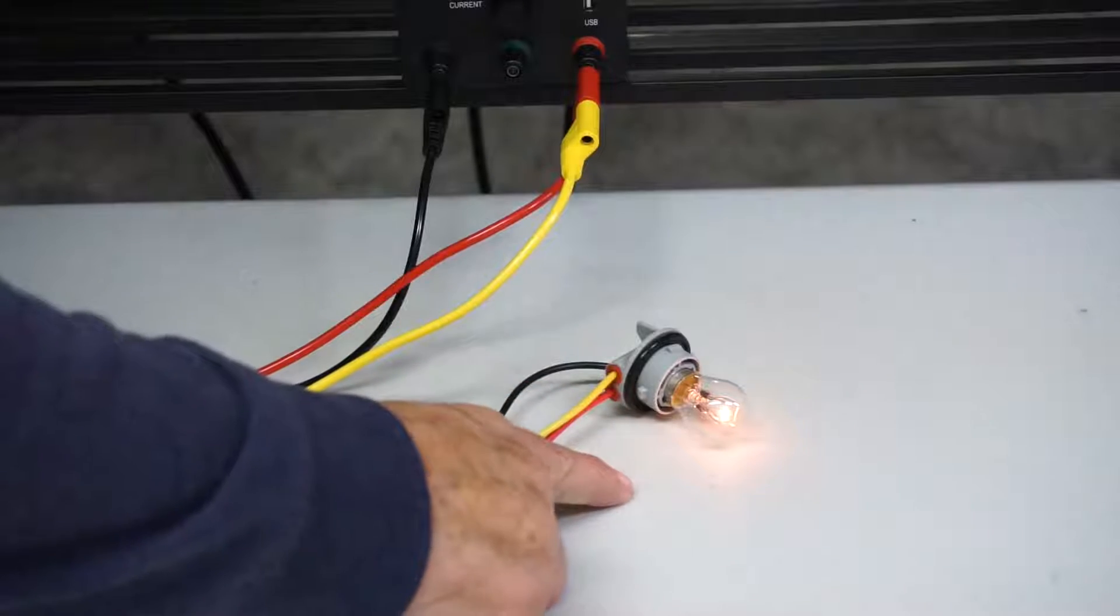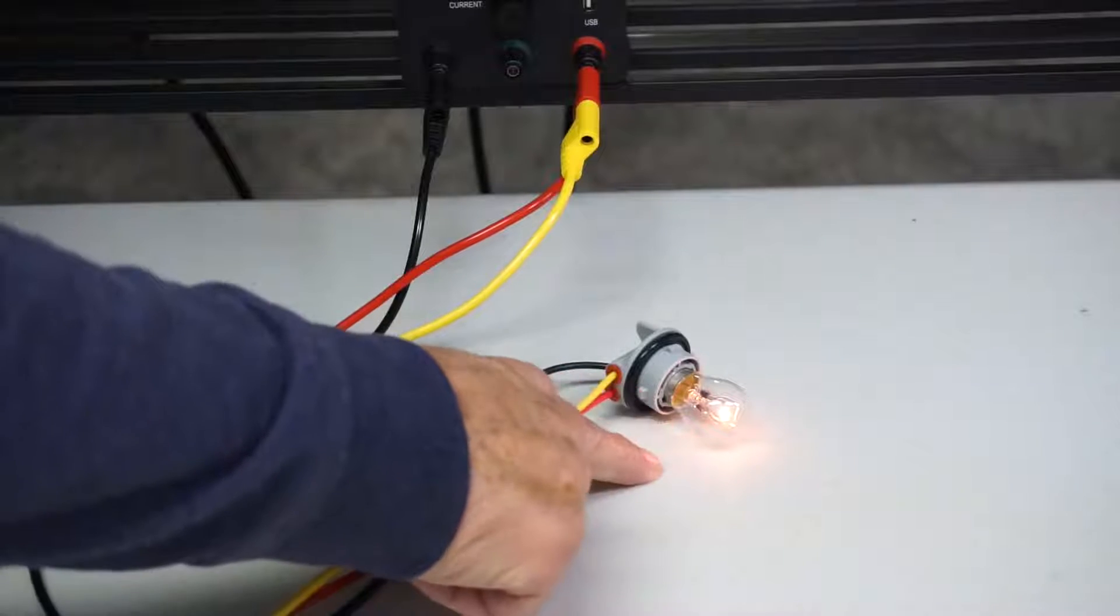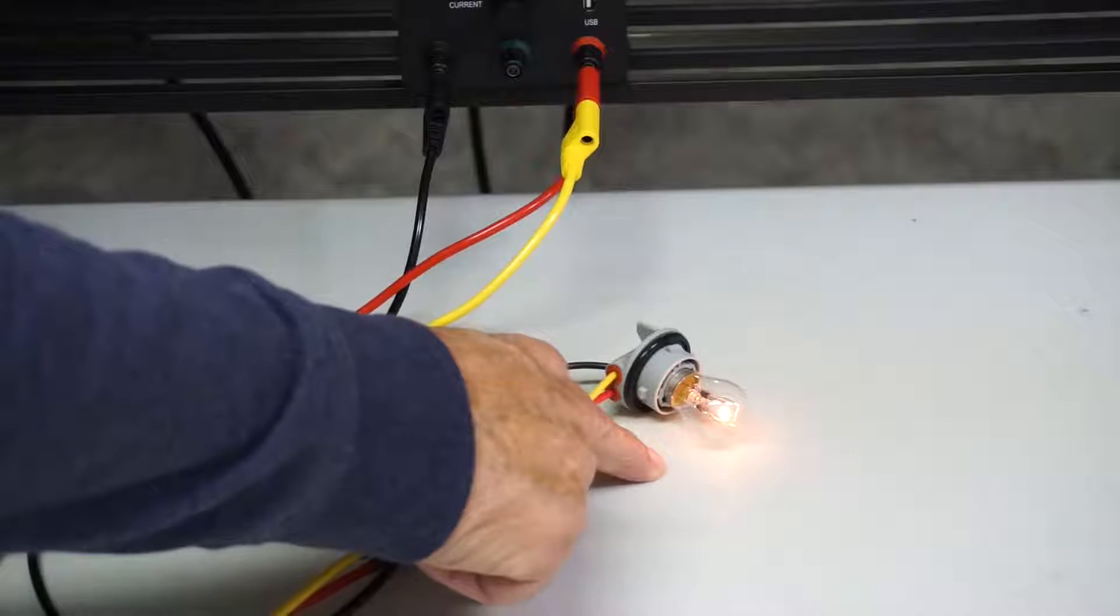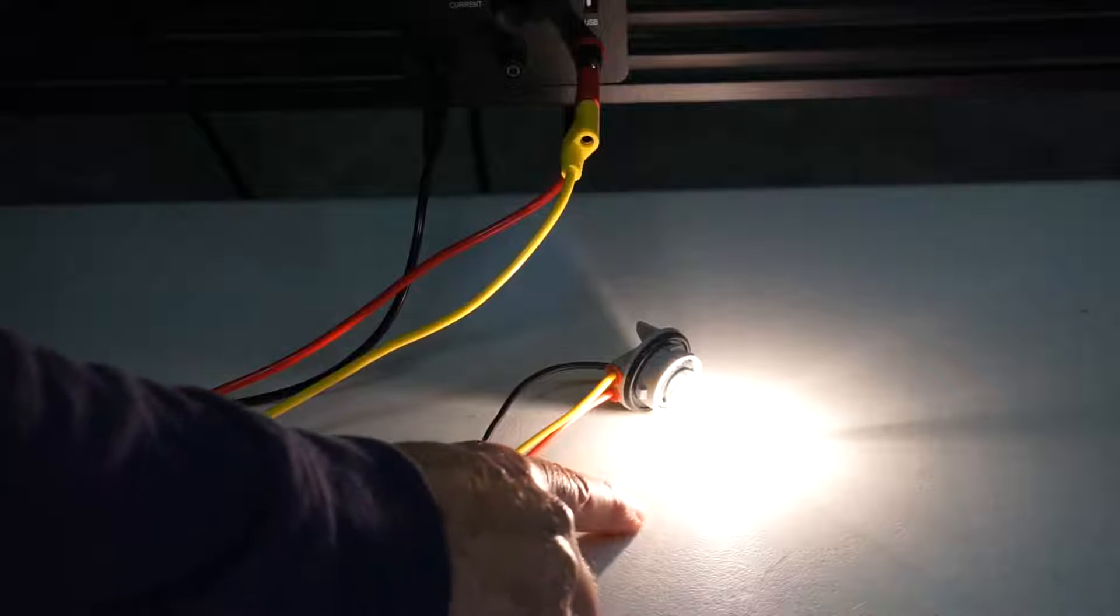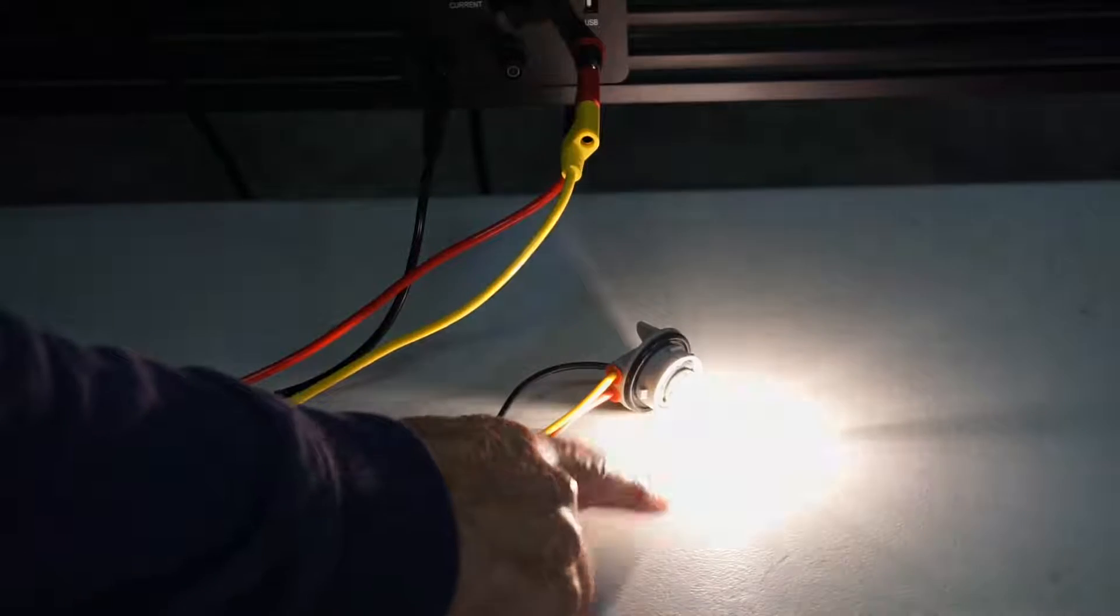If a power and ground cannot carry the current, the light will be dim or non-existent. And if it can carry the current, it's going to be good and bright.